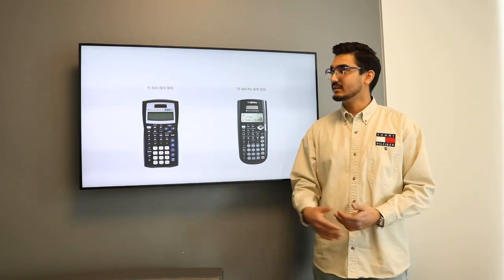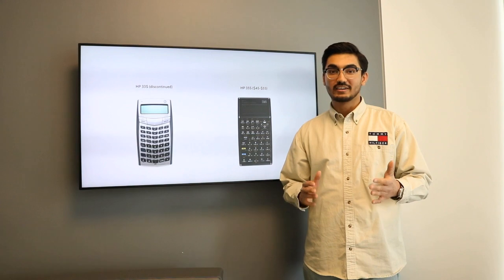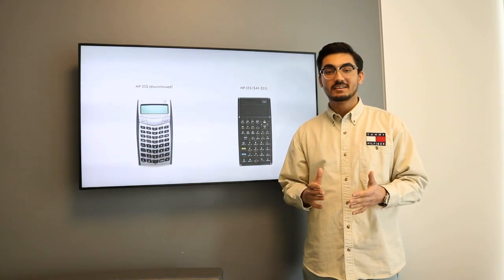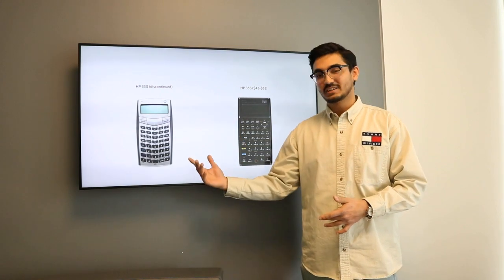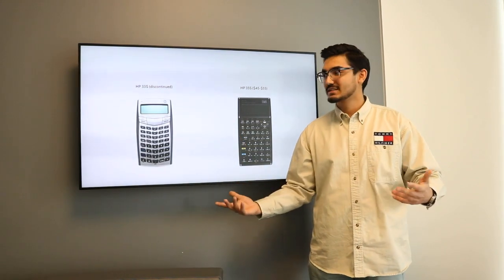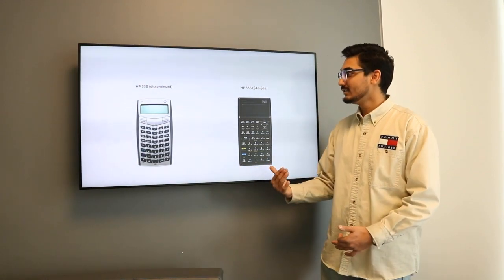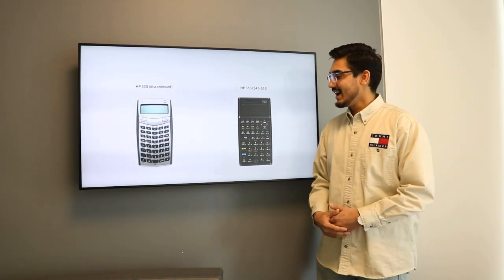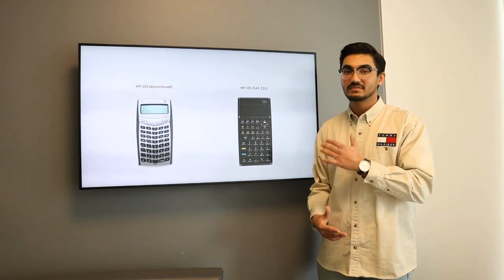The third one is the Ferrari out of the bunch. If there's money burning a hole in your pocket, you're going to get this one. Just don't get the older model, if it gets passed down to you, it's going to be useless. It's the discontinued HP-33S. The new model, the 35S, is the most expensive out of the bunch. It costs you around $45-$55.